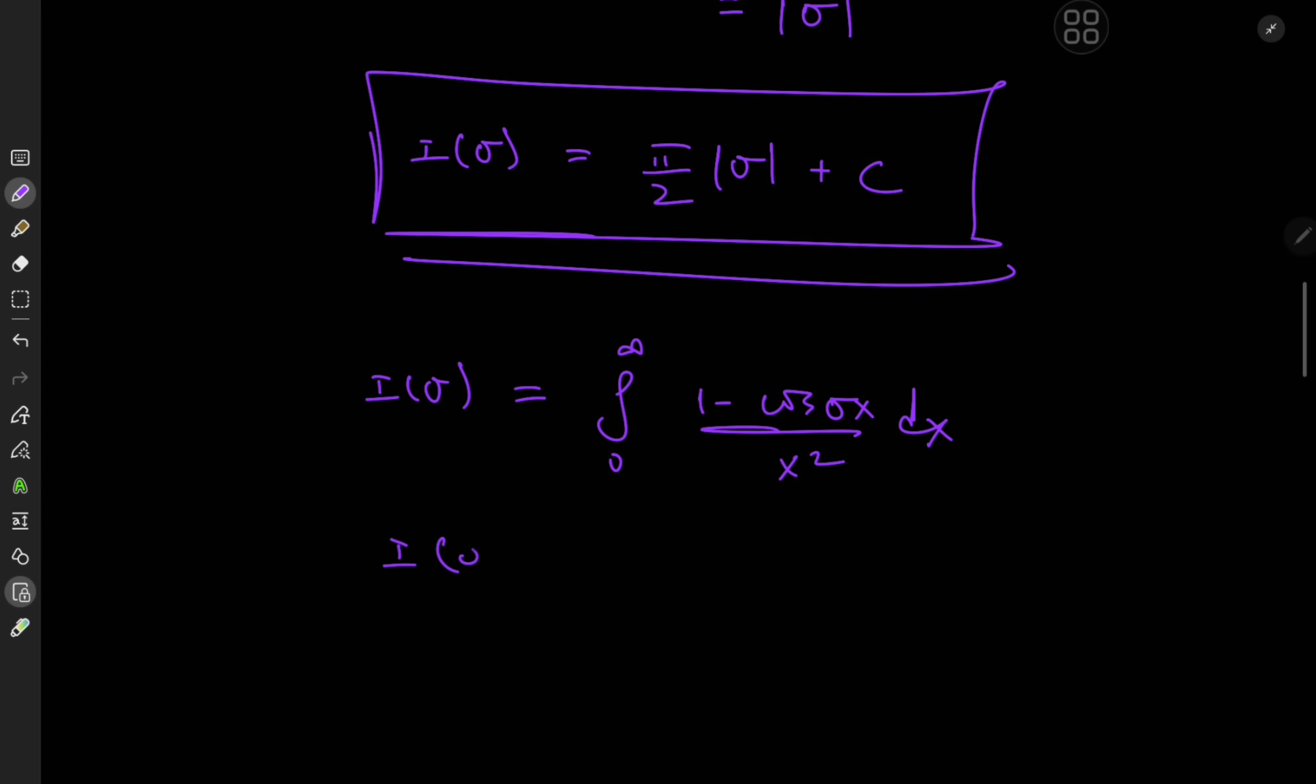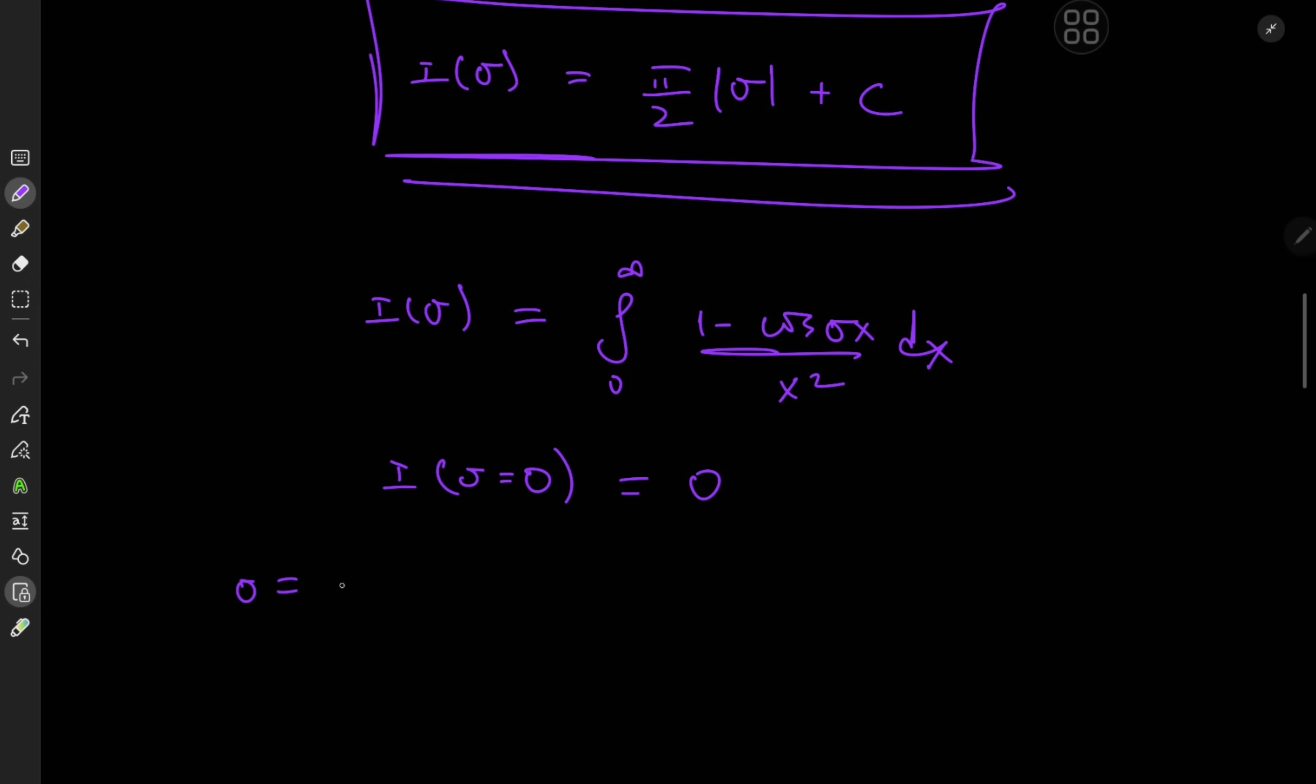Recall that i of sigma is defined as integral zero to infinity 1 minus cosine sigma x over x squared dx. So plugging in sigma equal to 0 will give us 1 minus 1 up top in the numerator so the entire integral collapses to 0. So that means using the initial value condition of i of 0 being 0 we have 0 equal to pi over 2 times 0 plus c implying that c conveniently equals 0.